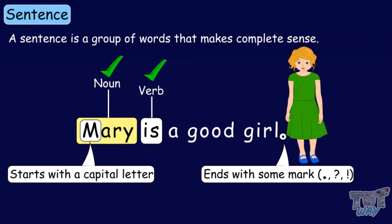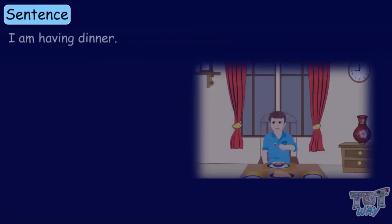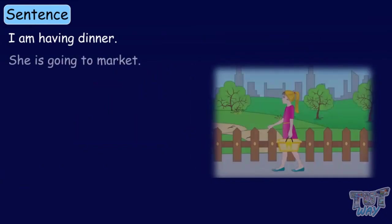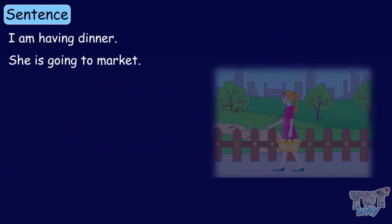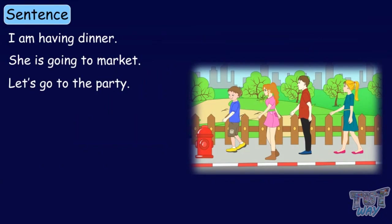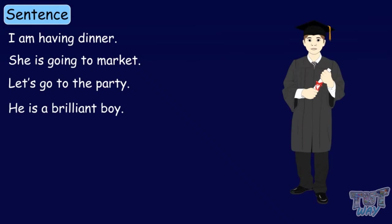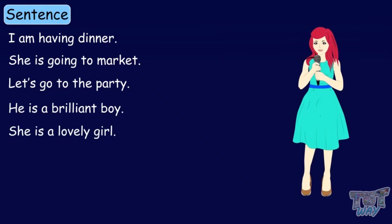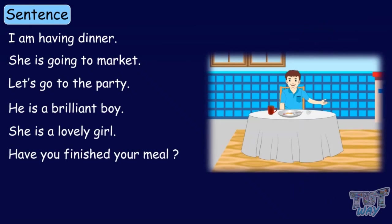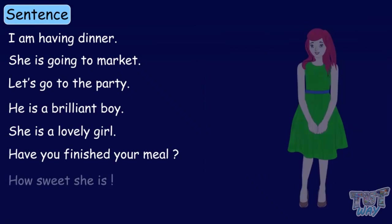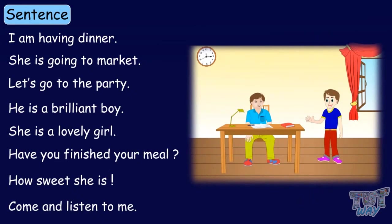For example: I am having dinner. She is going to market. Let's go to the party. He is a brilliant boy. She is a lovely girl. Have you finished your meal? How sweet she is. Come and listen to me. All these are examples of sentences — some short sentences — and they make complete sense.